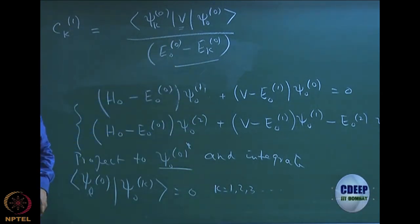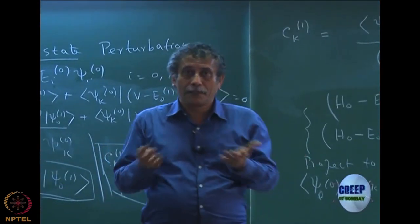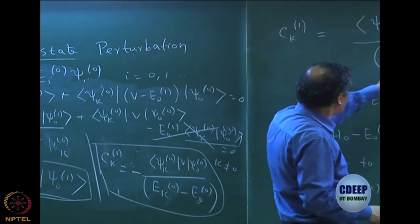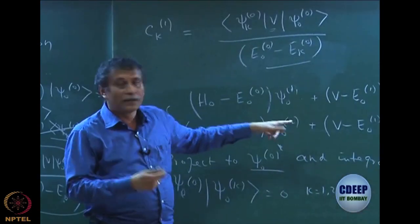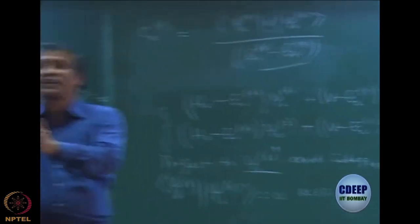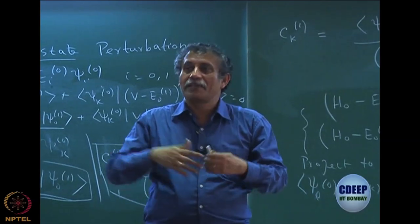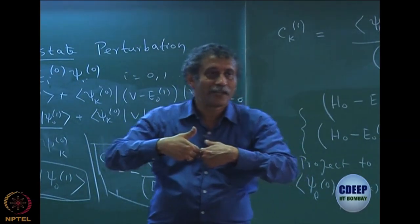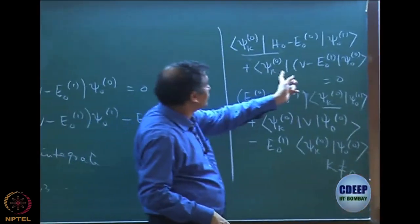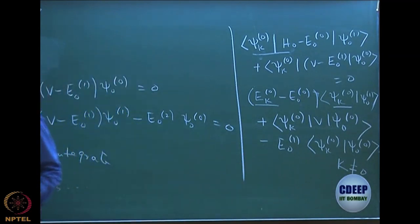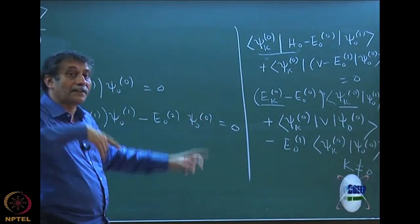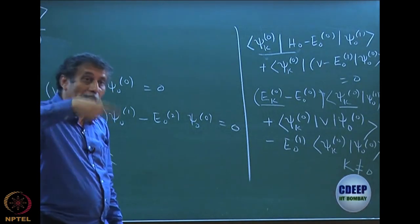This tells you something very interesting: the state whose energy is closest to the ground state of H0 contributes more because if the energy denominator is smaller, the coefficient is larger. That is one reason they say the HOMO-LUMO gap: if it is large, there is less contribution from that state. However, there is Brillouin's theorem to remember — certain singly excited determinants will not appear. These terms will further come when you go to second order, third order, and so on.